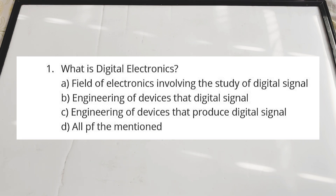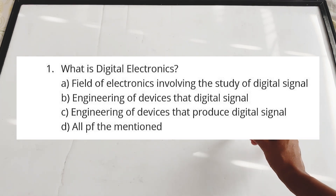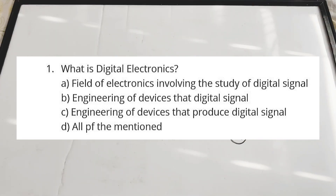The correct answer is D - all of the mentioned - because digital electronics is any branch that deals with digital signals. If you are dealing with digital signals, that is called digital electronics. Whether it is equipment that creates digital signals, uses digital signals, or even the study of digital signals - anything related to electronics equipment that either uses or produces digital signals is called digital electronics.